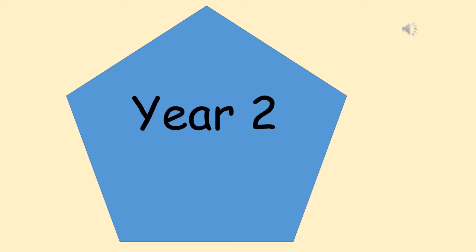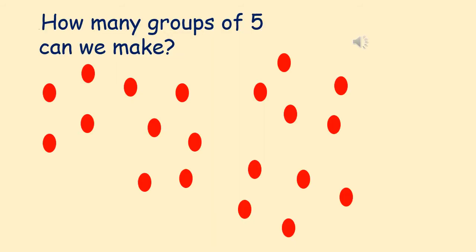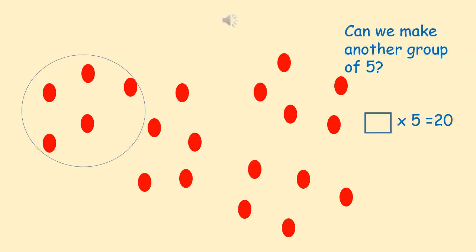So here's the year 2 section. Can you tell me how many red counters I've got on the screen? That's right. I've got 20. I wonder how many groups of 5 we can make? I found one group of 5. Can we make another group of 5? Perhaps we can work out the number sentence.